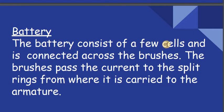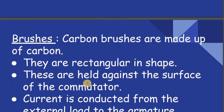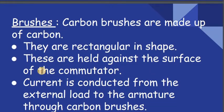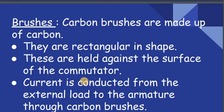The battery consists of a few cells and is connected across the brushes. The brushes pass the current to the split rings, from where it is carried to the armature. Carbon brushes are made up of carbon, are rectangular in shape, and are held against the surface of the commutator. The current is conducted from the external load to the armature through the carbon brushes.